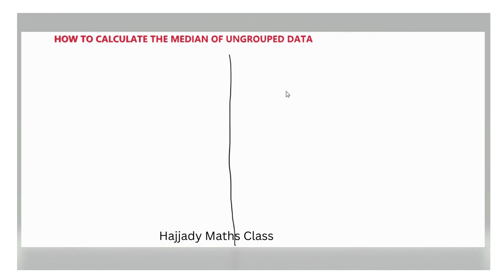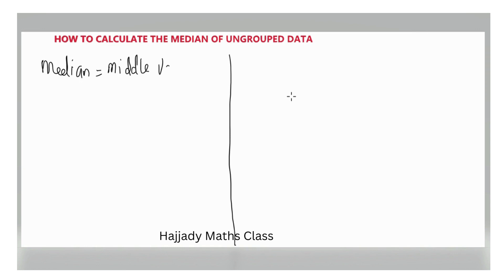Today we are going to talk about how to calculate the median of ungrouped data. The first thing I would like to mention is that median is the same thing as the middle value. There is another name for median — it is also known as the middle value. So whenever you are asked to calculate the median, what should come straight to your mind is that we want to calculate the middle value.